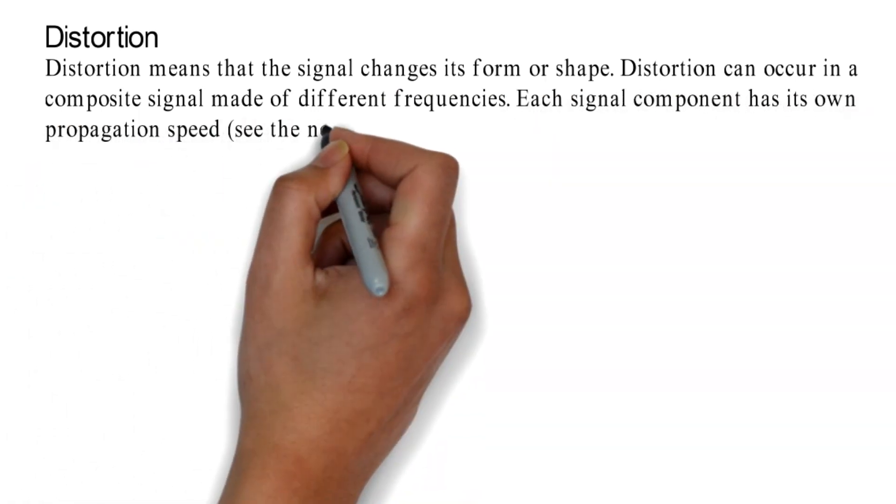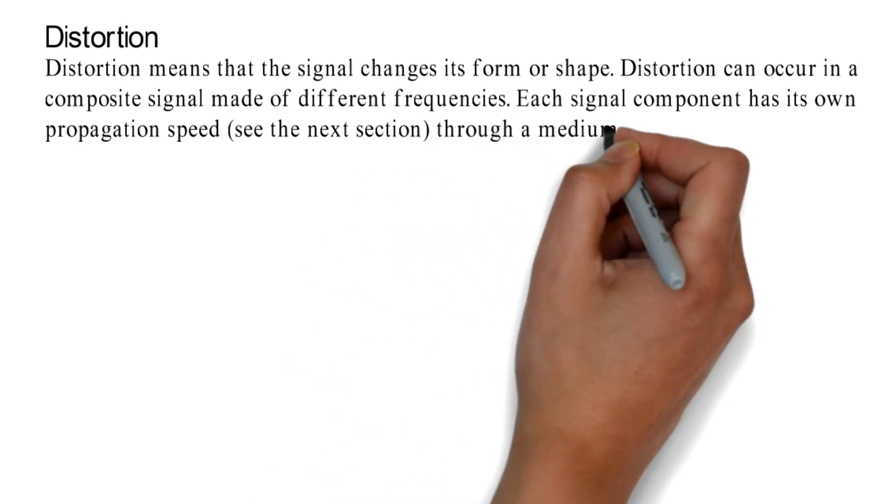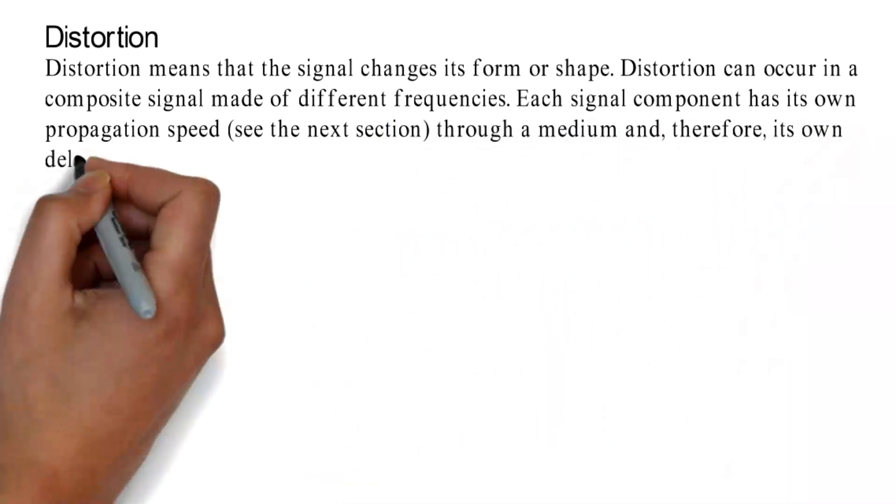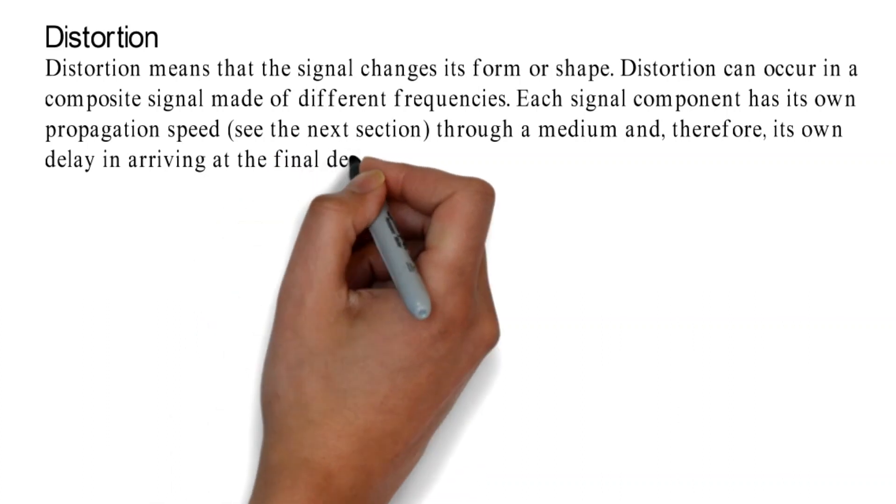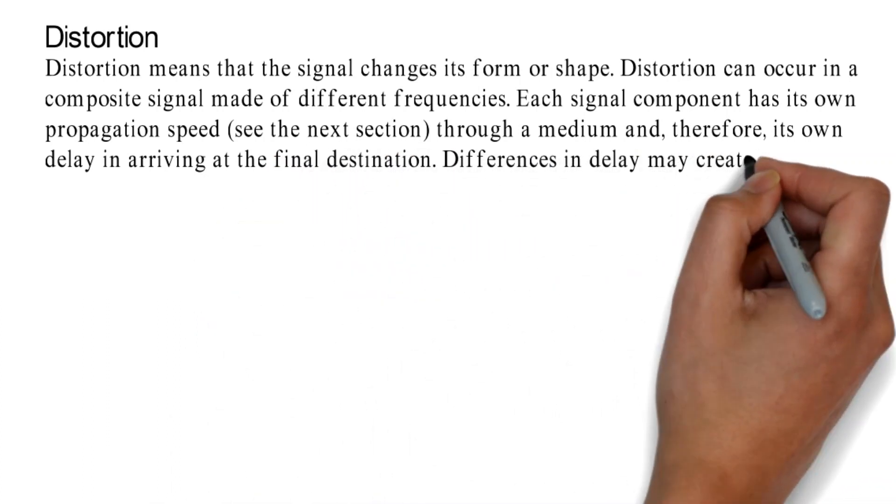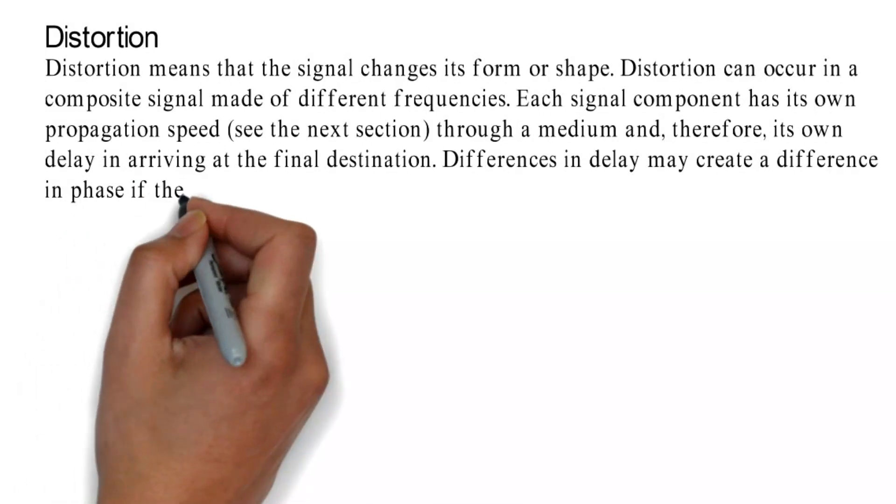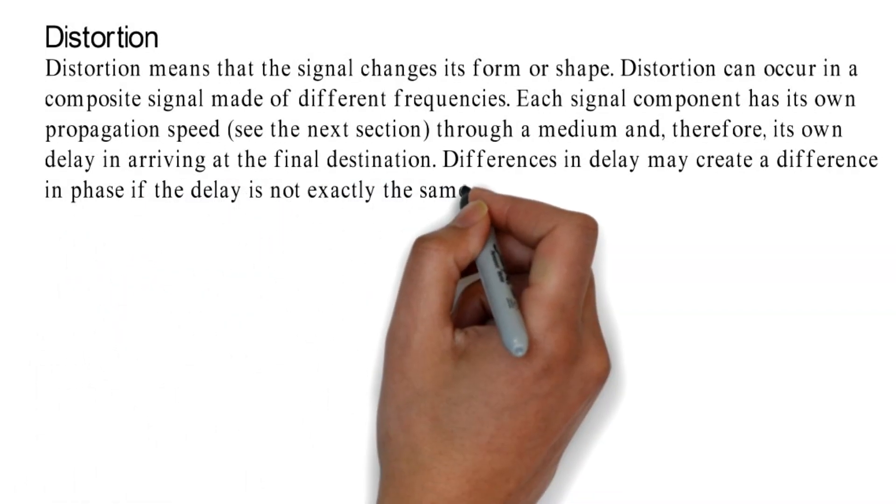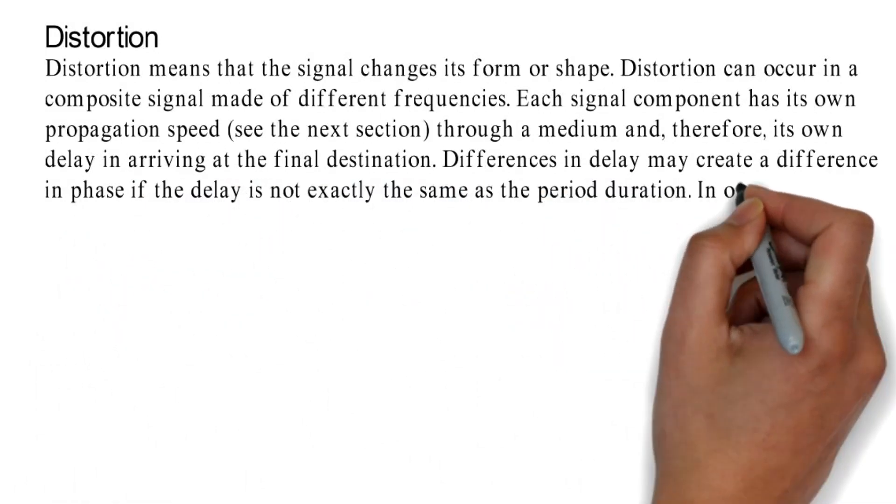Each signal component has its own propagation speed, see the next section, through a medium and, therefore, its own delay in arriving at the final destination. Differences in delay may create a difference in phase if the delay is not exactly the same as the period duration.